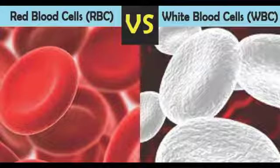RBCs transport oxygen from lungs to body tissue and carbon dioxide from body tissue to lungs with the help of hemoglobin. When people from the plains reach a hilly region, they feel temporary symptoms like breathlessness, nausea, and vomiting. This is called altitude sickness and is due to low supply of oxygen to the body at high altitudes.